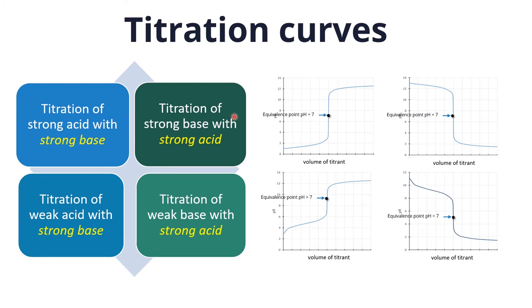For the titration of strong base with strong acid, your sample is a strong base so the pH starts at a high value. When you add strong acid as titrant, the pH will slightly drop until you reach the equivalence point, where the pH will be 7 again, with a very sudden change of pH. After that, the pH becomes that of the strong acid. So for both titrations between strong acid and strong base, the equivalence point pH will be 7.